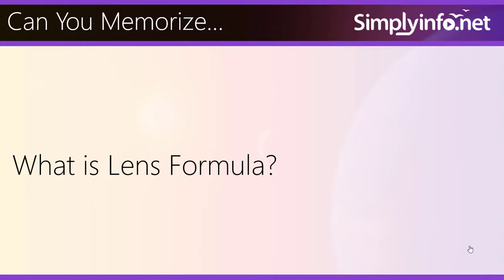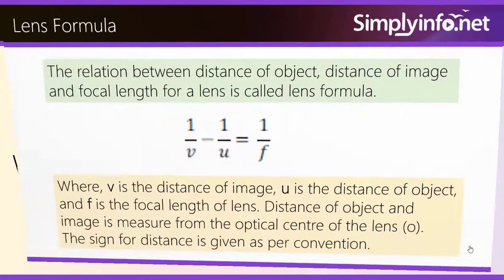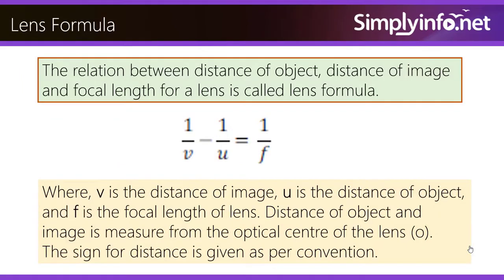Can you memorize what is lens formula? Lens formula: The relation between distance of object, distance of image and focal length for a lens is called lens formula. 1 by V minus 1 by U is equal to 1 by F, where V is the distance of image, U is the distance of object and F is the focal length of lens. Distance of object and image is measured from the optical centre of lens O. The sign for distance is given as per convention.